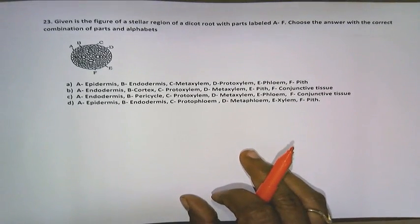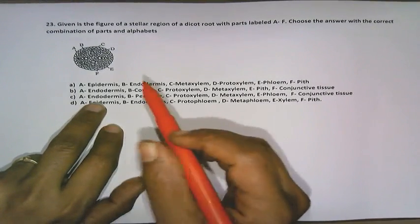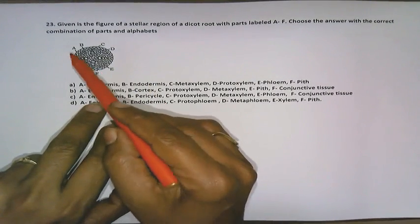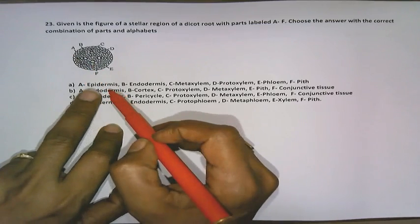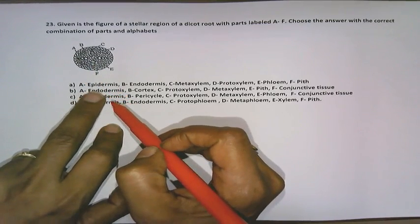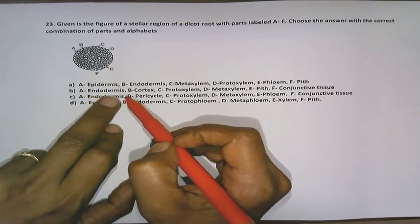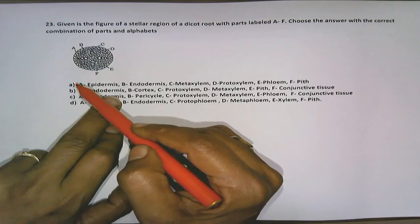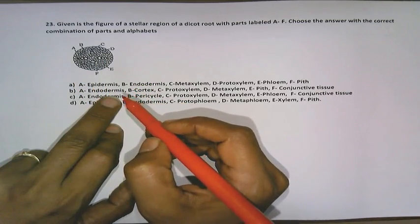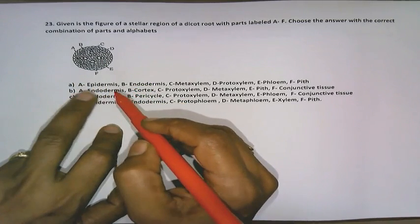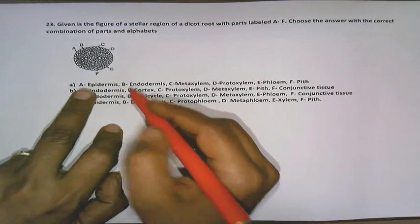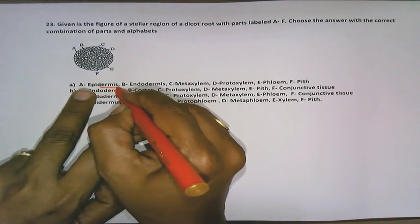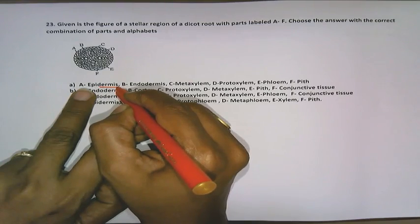As we move further to the next set, question number 23. In this question number 23, we need to see the options. So what is labeled A, A represents epidermis, that is represented as epidermis. But what is represented as B, that is very close to A, is present B which is actually pericycle. So what we have to observe is in option A, as we look, A is not epidermis. So it is wrong because of epidermis, so that cannot be happening.